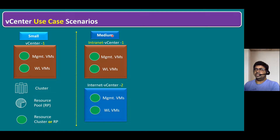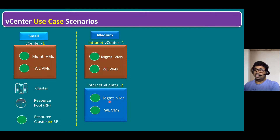For a medium-range infrastructure, the customer requirement is to segregate into two compartments: one intranet compartment for internal communication, and one internet compartment for external communication. In this scenario, one vCenter is not enough — we need two vCenters. One vCenter dedicated for intranet and another for internet. The internet domain also requires a separate Active Directory, separate DNS, and separate management VMs. Internet-facing servers are deployed on the internet vCenter.